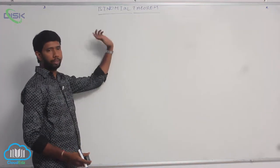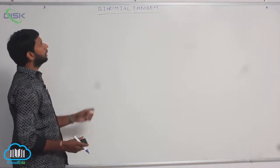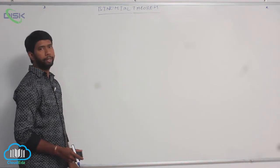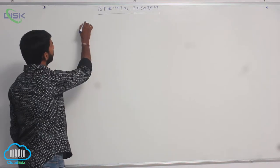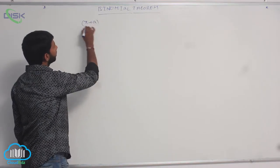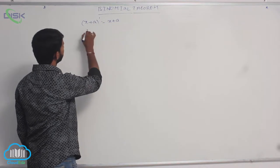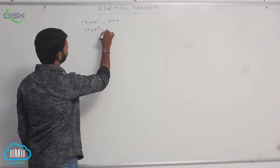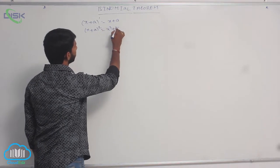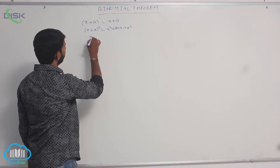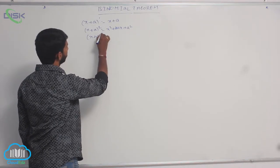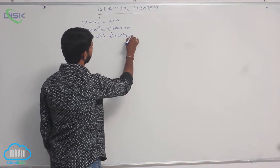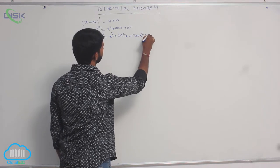Now we discuss the topic of the binomial theorem. An expansion consisting of two terms is said to be binomial expansion. That is, (x + a)^1 is equal to x + a. (x + a)^2 is equal to x² + 2ax + a². (x + a)^3 is equal to x³ + 3a x² + 3ax² + a³.